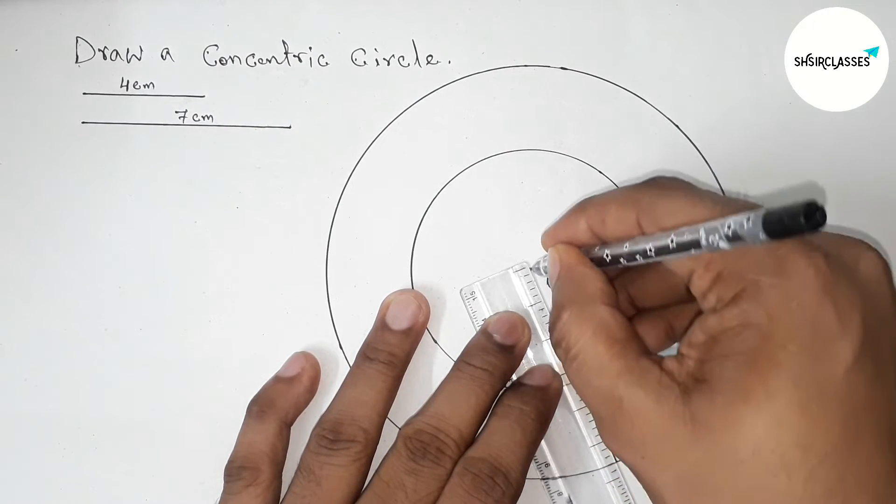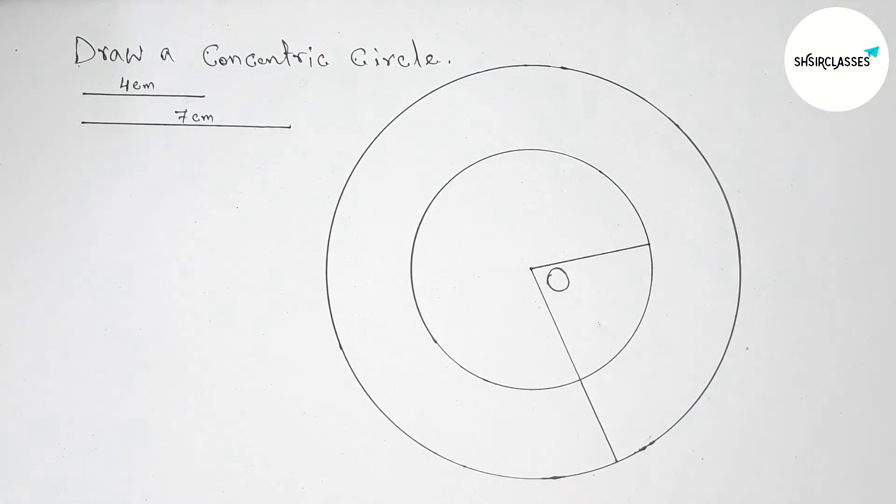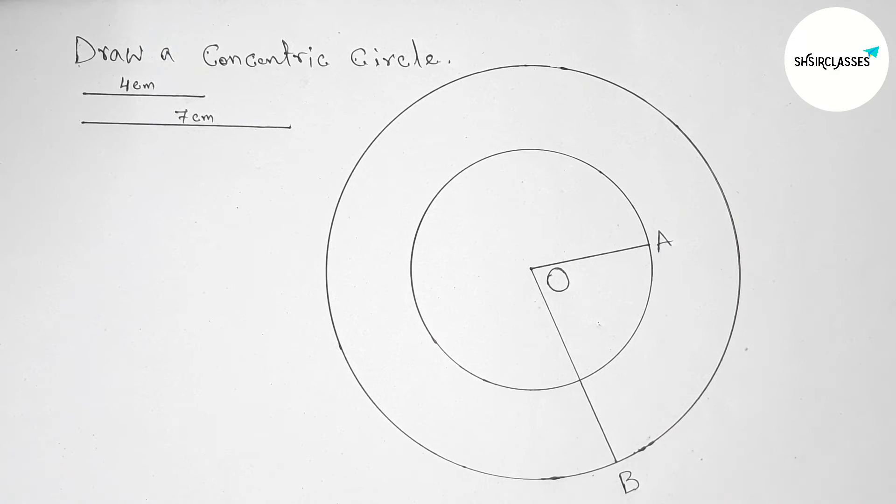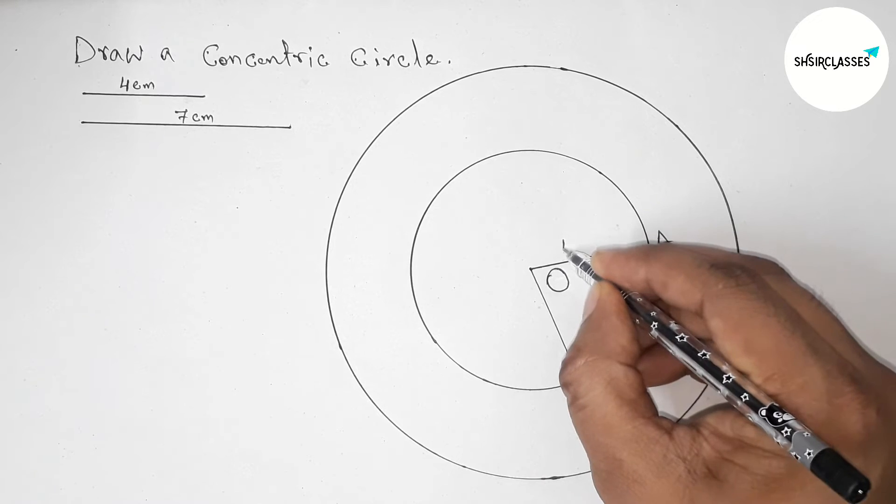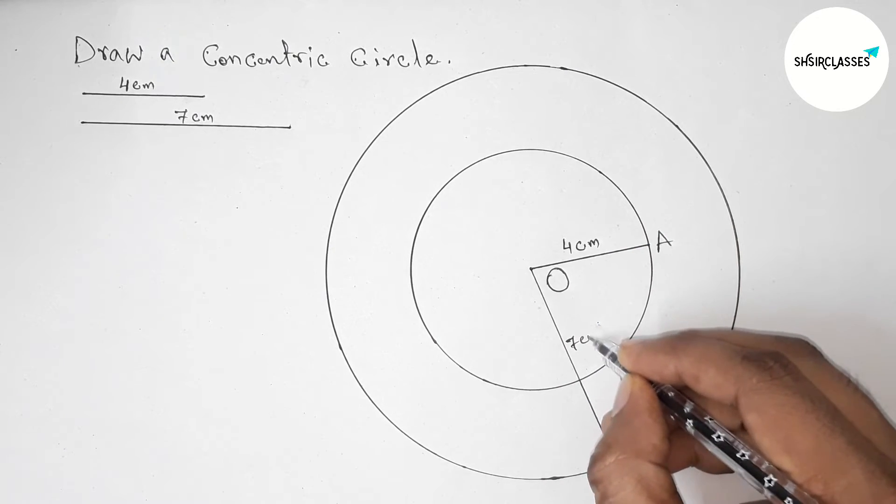Now joining this line. This is the greatest radius seven centimeter, and now joining this, this is four centimeter radius. Now taking here point A and here B, so OA that is four centimeter, OB this is seven centimeter radius.